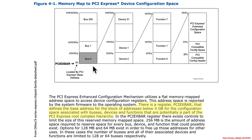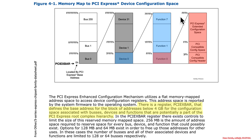Why is it 256 megabytes? At the very bottom you have bus zero, and within bus zero you have 32 devices, within each device you have eight functions, and within each function you can have four kilobytes of extended address space. So hex 1000 is four kilobytes, times eight is 32 kilobytes, times 32 is one megabyte per bus, and then 256 buses gives you up to 256 megabytes.